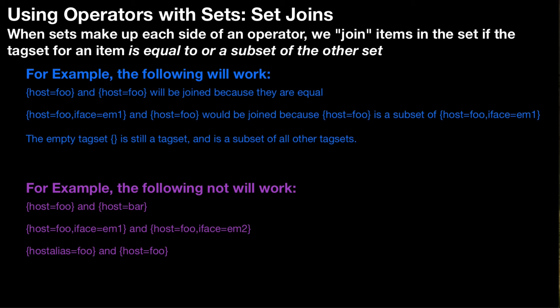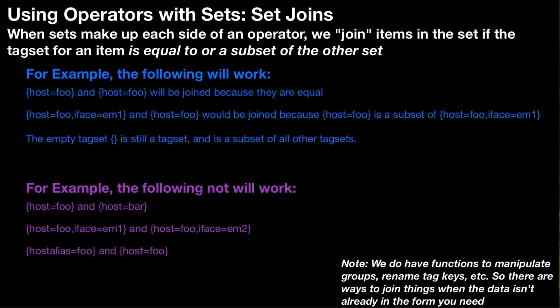You can also have the empty tag set because that's still a tag set and is a subset of other tag sets — the empty tag set will be a subset or equal to all tag sets. You also can't have something like host_alias equals foo and host equals foo because the tag keys are different. It is worth noting we do have functions to manipulate groups and rename tag keys, so there are ways to join things when the data isn't already in the form you need.